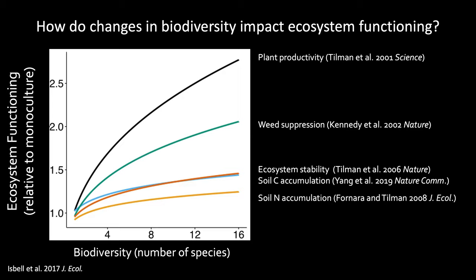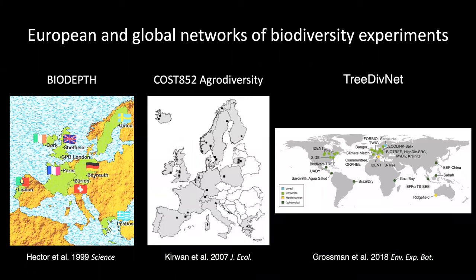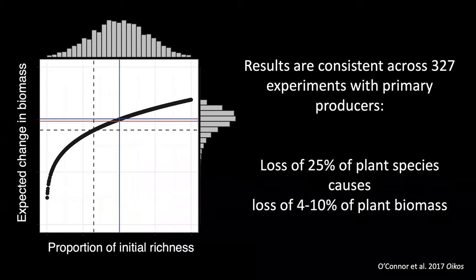These diverse mixtures show about 25% more soil nitrogen accumulation on an annual basis. Other experiments with similar designs have been conducted in grasslands across Europe and forests worldwide, and in many other freshwater, marine, and terrestrial ecosystems. A meta-analysis of results from 327 experiments that manipulated the diversity of primary producers found that losing about one in four species causes loss of about 4 to 10% of primary producer biomass. The shape of this curve is largely consistent with the rivet redundancy hypothesis.